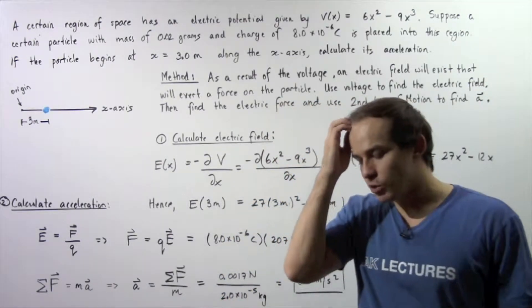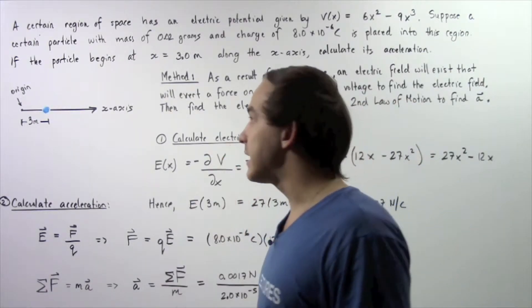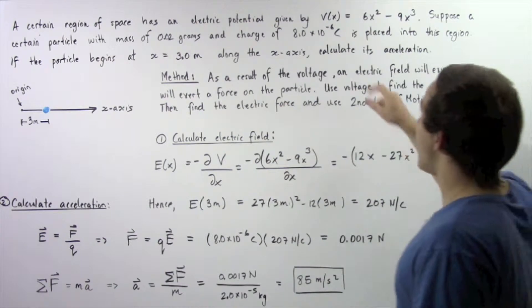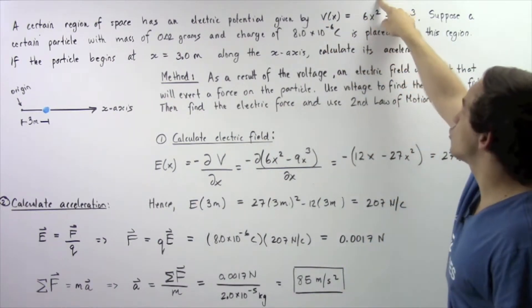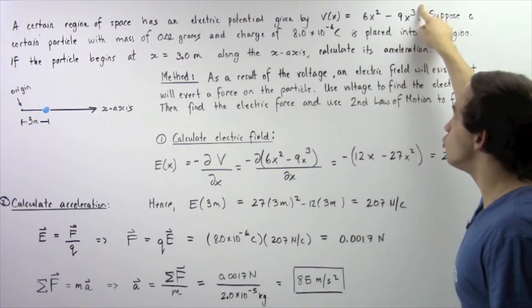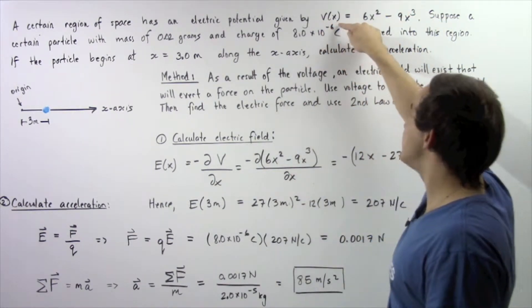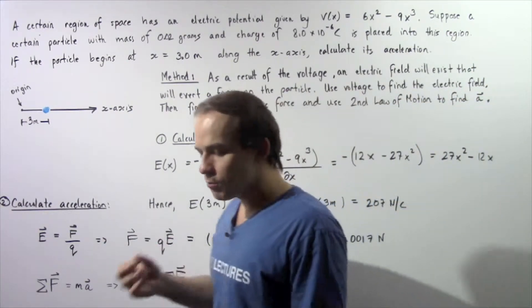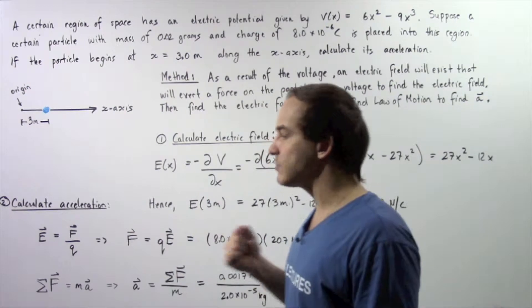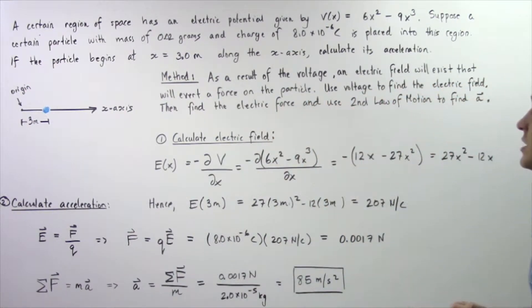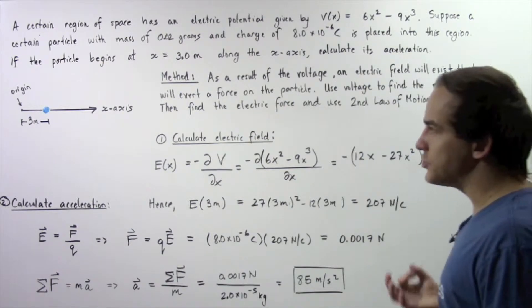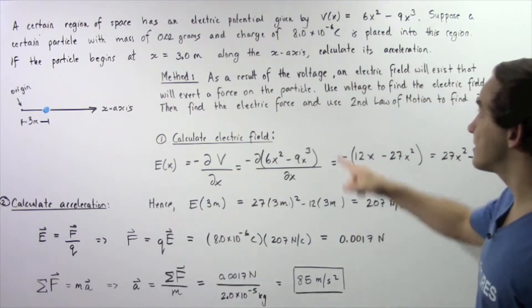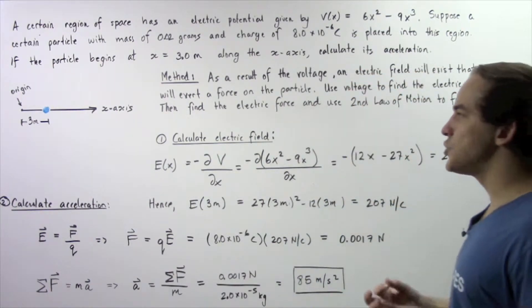Let's look at the following example dealing with electric fields and electric potential. A certain region of space has an electric potential given by V of x equals 6x squared minus 9x cubed, where V is the voltage depending on the x coordinate. A particle with a mass of 0.02 grams and electric charge of 8 times 10 to the negative 6 Coulombs is placed into this region. If the particle begins at x equals 3 meters along the x axis, calculate its initial acceleration.